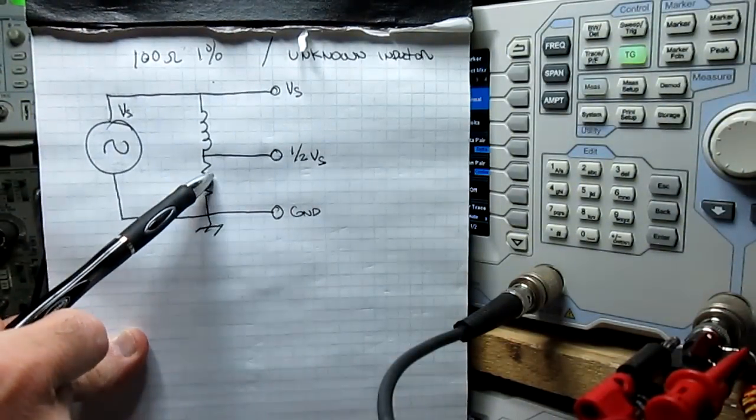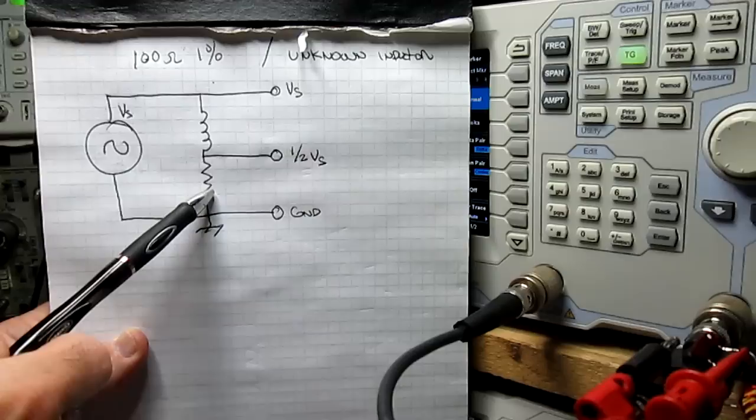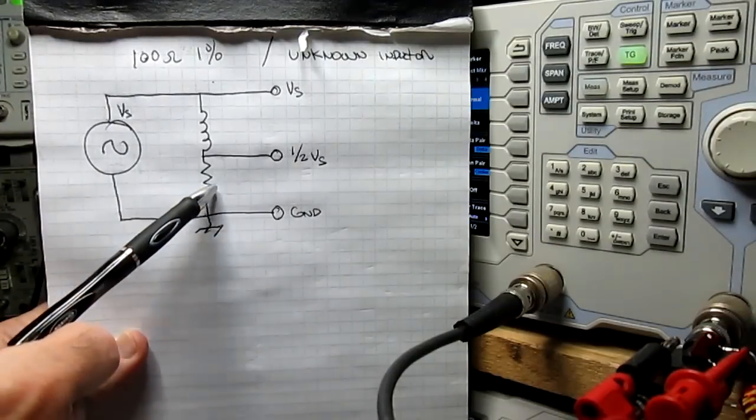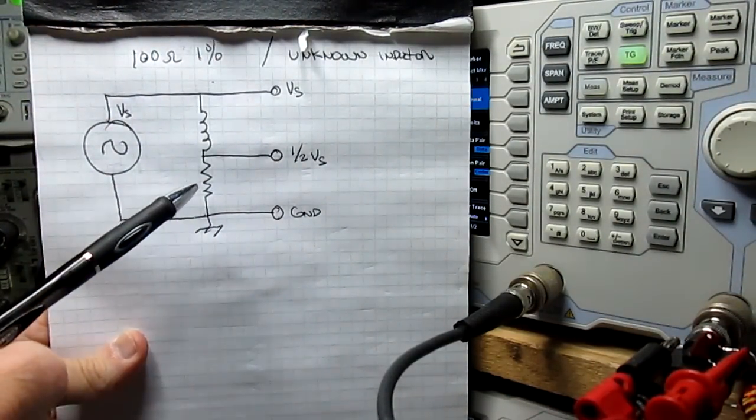The idea is that between ground and the junction between the inductor and the resistor, you want one half of the voltage being applied by the source. When you do that, you plug the number and value of the resistor in.